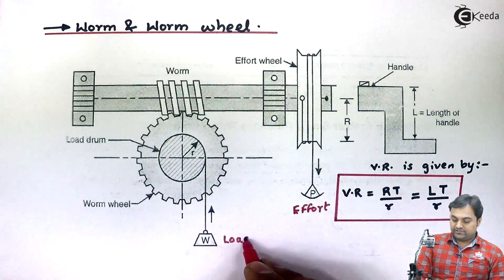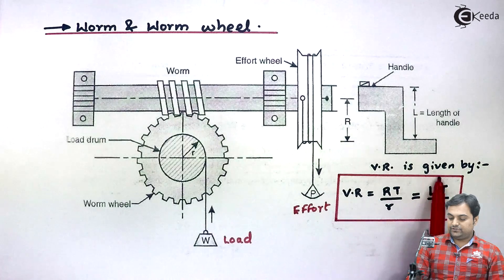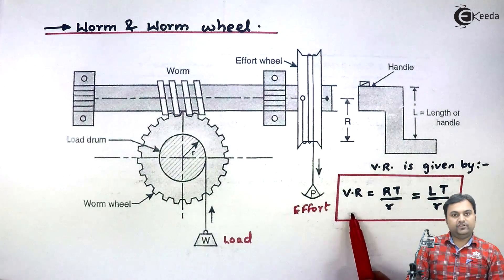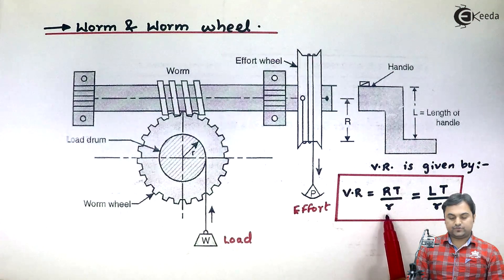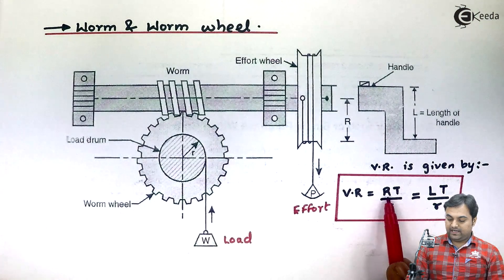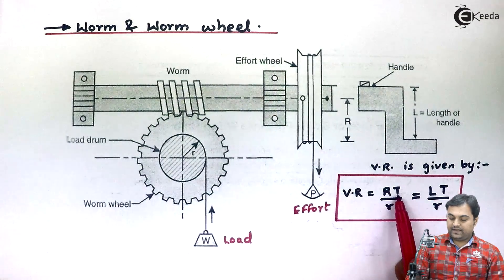And here is the velocity ratio formula for worm and worm wheel. It is given by capital R times T divided by small r, where capital R is the radius of effort wheel.